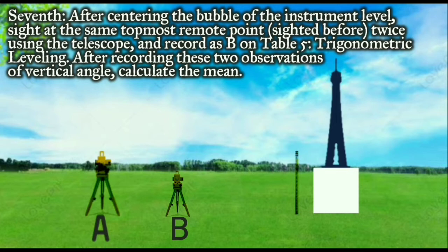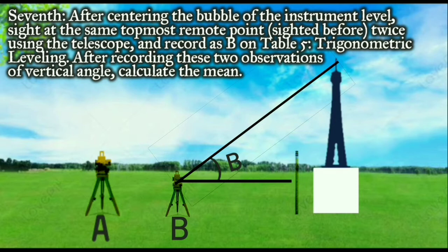Seventh, after centering the bubble of the instrument, level sight at the same topmost remote point twice using the telescope and record as B on Table 5: Trigonometric Leveling. After recording these two observations of vertical angle, calculate the mean.